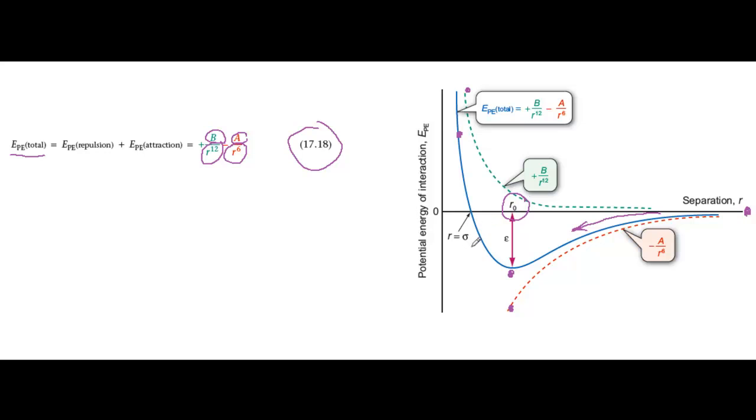If they get any closer, the potential energy starts to become more positive as the repulsive forces begin to dominate, and the molecules would tend to move back to their equilibrium separation.